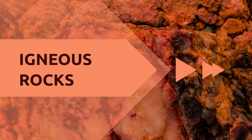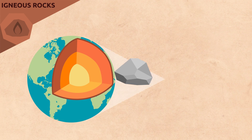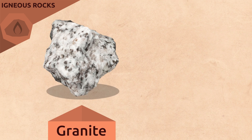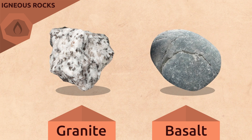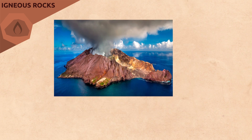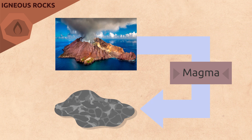Igneous rocks are very hard rocks formed deep inside the earth. Examples of igneous rocks are granite or basalt. Both are formed from magma, which erupts as volcanic lava. As soon as it reaches the surface of the earth, lava cools and solidifies rapidly.